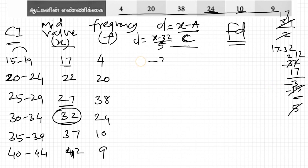22 minus 32 is minus 10, divided by 5 is minus 2. 27 minus 32 is minus 5, divided by 5 is minus 1. 32 minus 32 is 0, divided by 5 is 0. 37 minus 32 is 5, divided by 5 is 1. 42 minus 32 is 10, 10 by 5 is 2.